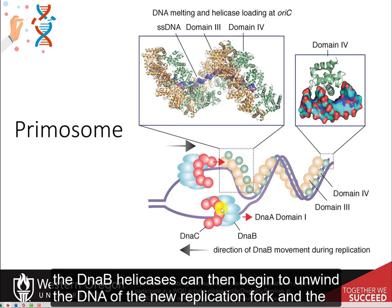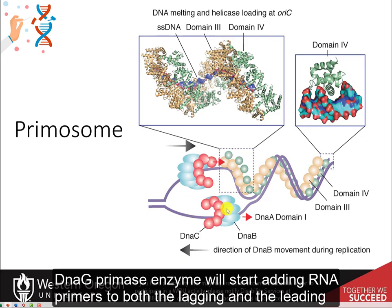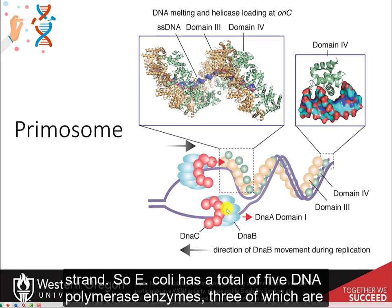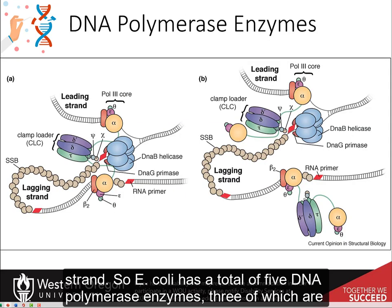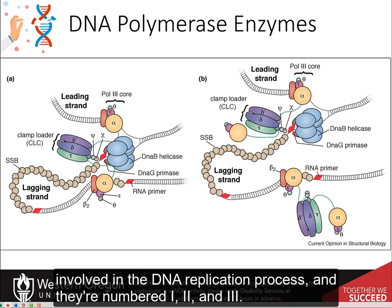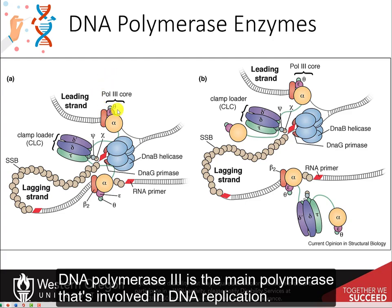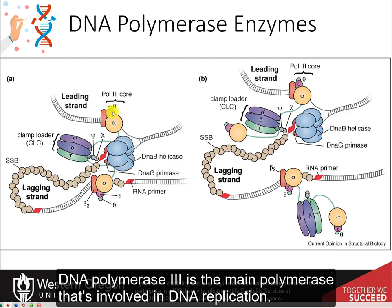The DnaB helicases can then begin to unwind the DNA at the new replication fork, and the DnaG primase enzyme will start adding RNA primers to both the lagging and the leading strand. E. coli has a total of five DNA polymerase enzymes, three of which are involved in the DNA replication process — numbered one, two, and three. DNA polymerase 3 is the main polymerase involved in DNA replication, and it synthesizes most of the leading strand and the Okazaki fragments.